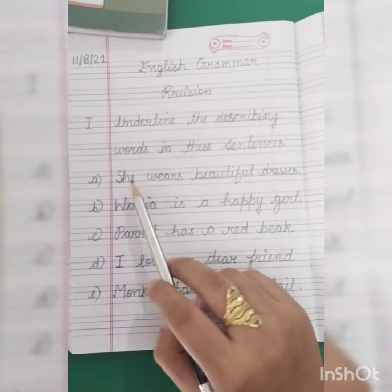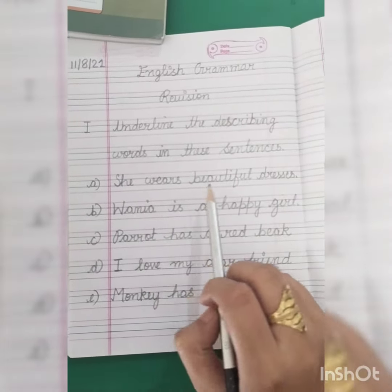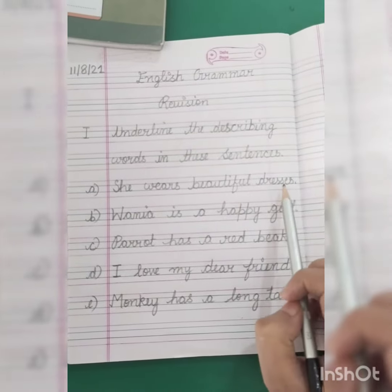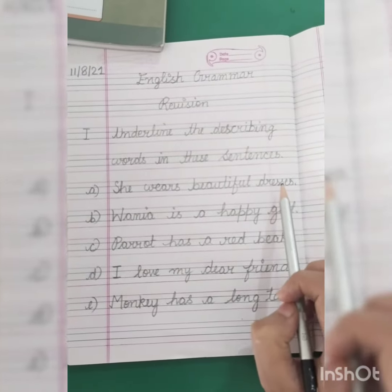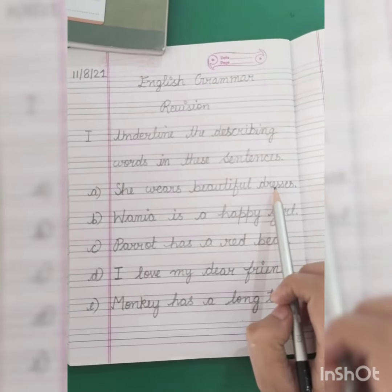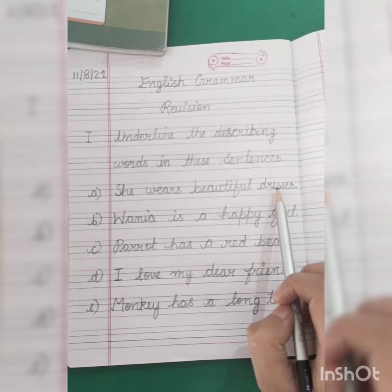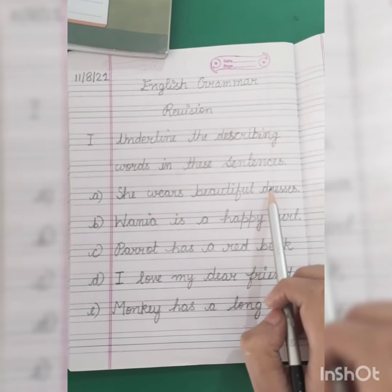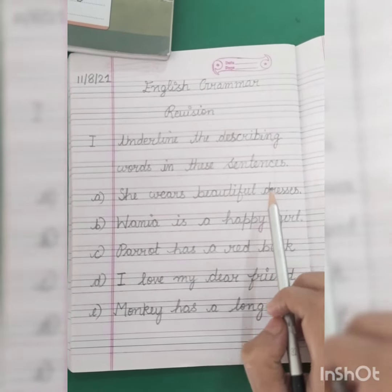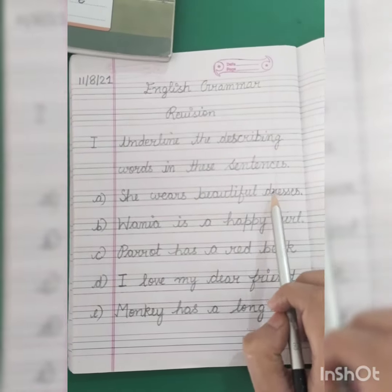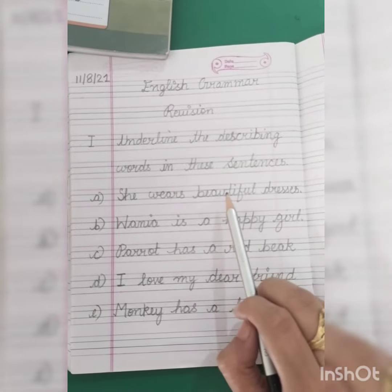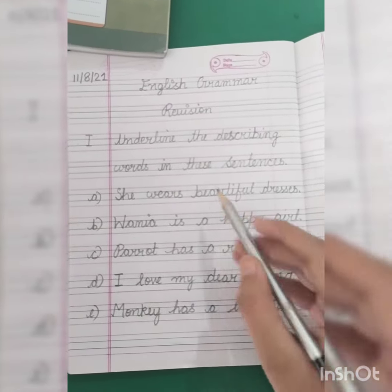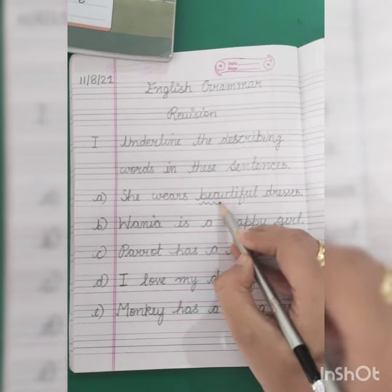For example: She wears beautiful dresses. Woh beautiful dresses painti hai. Toh yahan pe 'dresses' kya ho gaya? Naming word ho gaya — noun ho gaya. Kaisi dresses hain? Khoobsoorat dresses hain. So 'beautiful' — khoobsoorat — is a describing word here. So you will underline 'beautiful'.